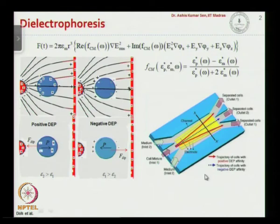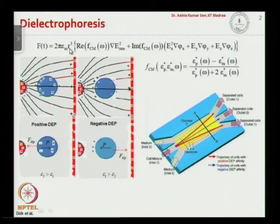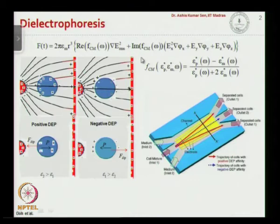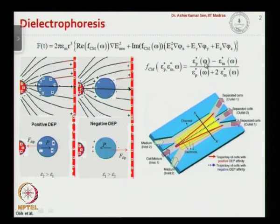The first active separation method we will talk about is dielectrophoresis. The dielectrophoretic force is given by 2π times the permittivity of the medium, times the cube of the radius, times the real part of the Clausius-Mossotti factor, and the gradient squared of the electric field. The Clausius-Mossotti factor has two components: the complex permittivity of the particle and that of the medium, which are functions of the applied frequency of the AC signal.